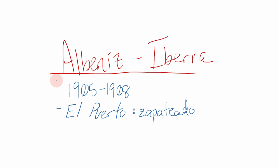The last example we'll listen to today is a work highly praised by Debussy as one of the most brilliant piano works. It is the Iberia Suite by Albéniz — super difficult and very long. It's a collection of 12 pieces, composed between 1905 and 1908, and it exemplifies the impressionist style but from the perspective of a Spanish composer, giving it a completely different flair. The piece we're going to listen to is El Puerto, based on a Spanish dance style called Zapateado.